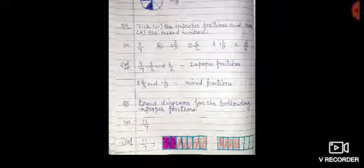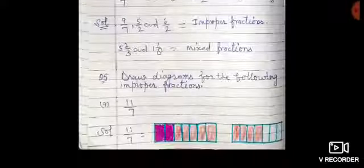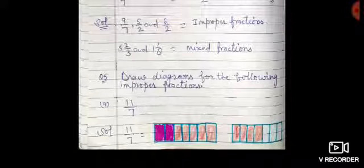So I have shown you: 6 upon 2 is an improper fraction, and the mixed fractions are 5 whole 2 upon 3 and 1 whole 1 upon 8. Next question is: draw diagrams for the following improper fractions. Until now we showed proper fractions in shaded diagrams, but here the question is how to show an improper fraction like 11 upon 7. We need to show 11 parts shaded out of 7. I took a rectangle, divided it into 7 parts, but since we need 11, I drew another rectangle with 7 parts — now 7 and 7 make 14. I shaded 11 and left the rest.